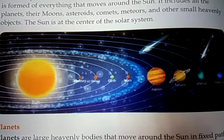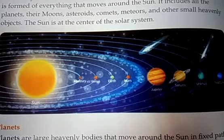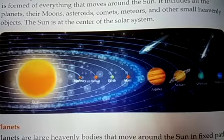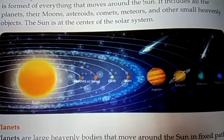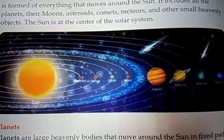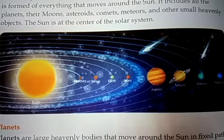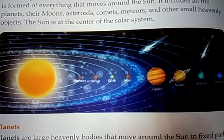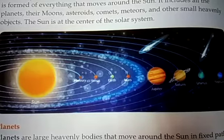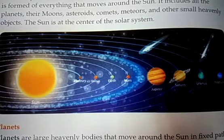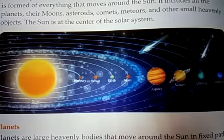There are eight planets in the solar system. The eight planets in the order of the increasing distance from the sun are, from the sun, which is the closest planet. The first planet is Mercury, Venus, Earth, Mars, Jupiter, Saturn, Uranus and Neptune. These are the eight planets.